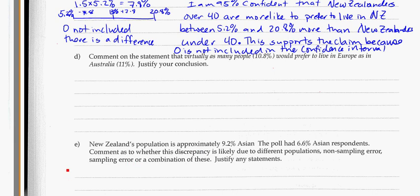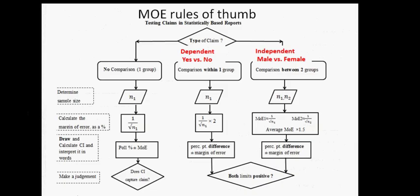Let's think about how we'd calculate it and show it. We'll look at the flowchart again. In this particular poll, we're asking all the New Zealanders where they would prefer to live. Is it a dependent or independent choice to pick between Australia and Europe? If somebody picked Australia at 11% and then changed their mind to pick Europe instead, does that change the percentage Europe has? It does — so this is a dependent claim, and we're going to use 2 times the margin of error.